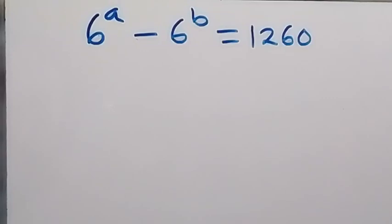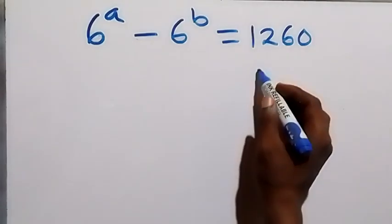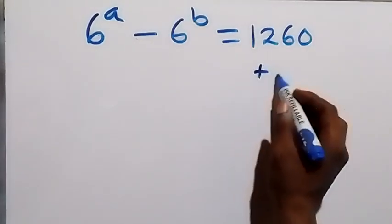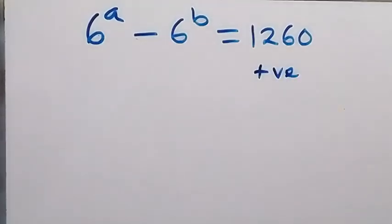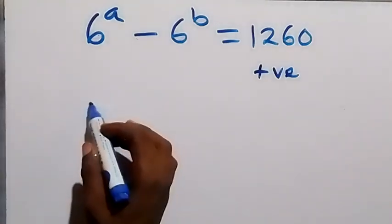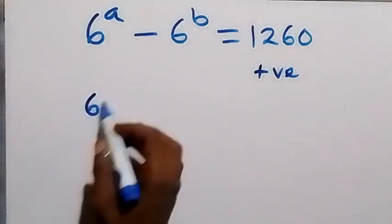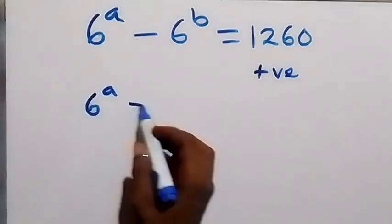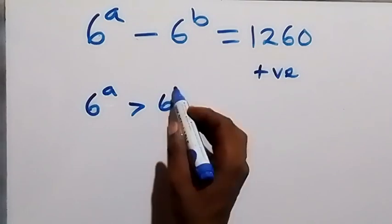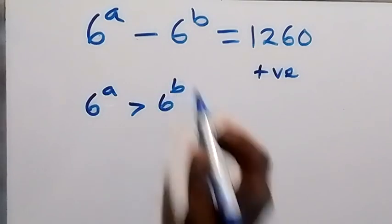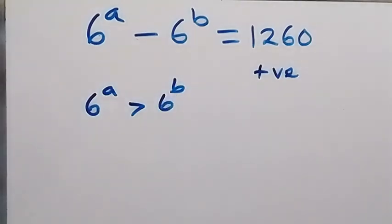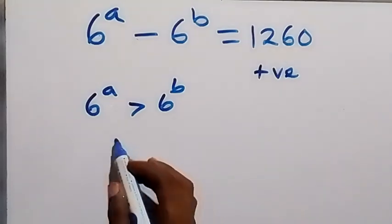Hello, you are welcome here. Let's solve this nice exponential equation — we are finding the value of a and b. The right-hand side is of course a positive number, so this implies that 6 raised to power a should be greater than 6 raised to power b.